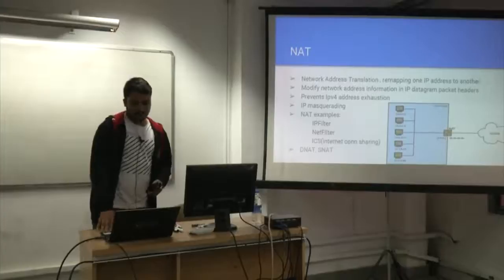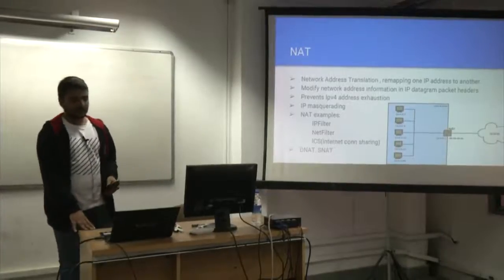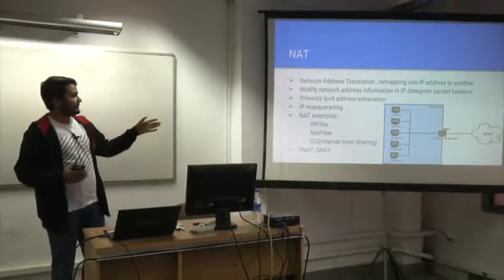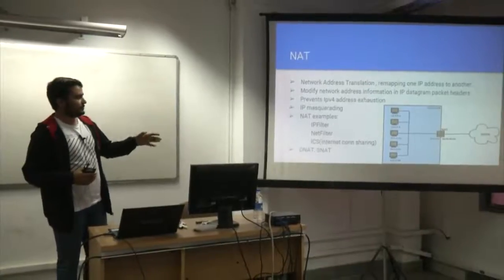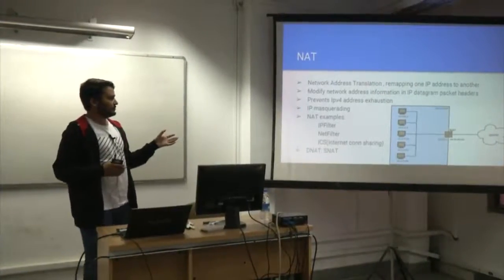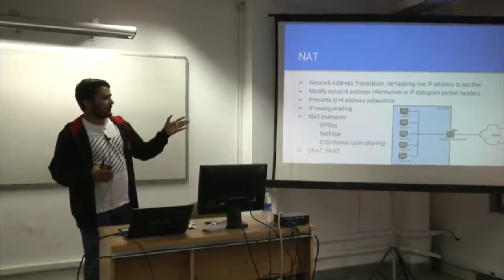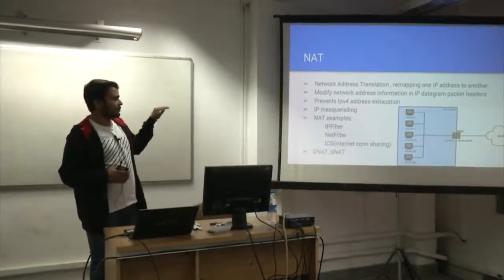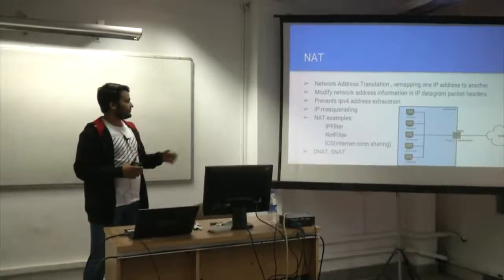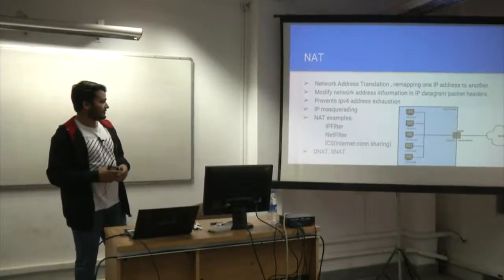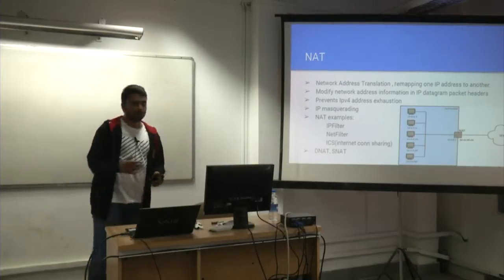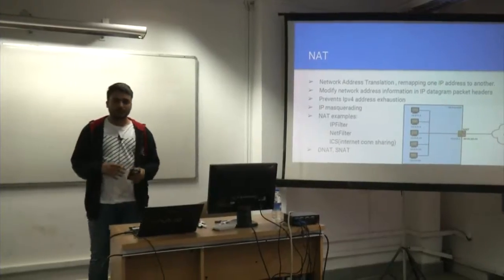Next is NAT, which is Network Address Translation. It does the remapping of one IP address to another. For example, computers with private IP addresses will have them converted to a public IP address before the packet is sent out into the network. Various examples of NAT include IP filter, Netfilter, ICS, DNAT and SNAT. NAT also enables IP address extension.